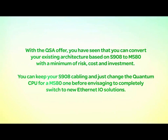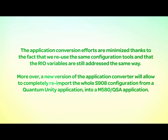With the QSA offer, you have seen that you can convert your existing architecture based on S908 to M580 with minimum risk, cost, and investment. You can keep your S908 cabling and just change the Quantum CPU for an M580 CPU before envisioning to completely switch to new Ethernet IO solutions. The application conversion efforts are minimized thanks to the fact that we re-used the same configuration tools and that the remote IO variables are still addressed in the same manner. Moreover, a new version of the application converter will allow you to completely re-import the entire S908 configuration from a Quantum Unity application into an M580 and QSA application.